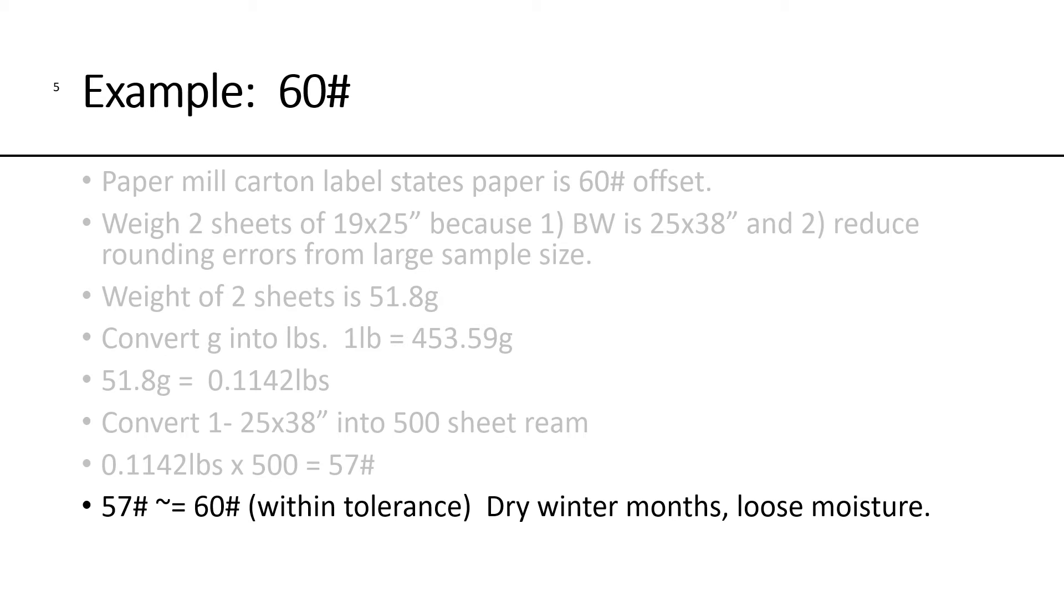So, 57 pounds is approximately the same equivalent to a 60-pound paper. That's certainly within tolerances, and we'll talk more about tolerances in a second, but you have to realize that during dry winter months, paper often loses some moisture or relative humidity.